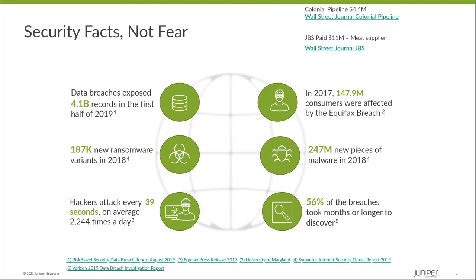A lot of what's available now to anybody out there with a credit card and motivation is the ability to buy ransomware as a service or buy DDoS as a service. All you really need is the motivation, a credit card, and maybe access to the dark web at most. The Colonial Pipeline incident specifically was interesting in that the group behind the malware as a service used in that attack never meant for it to go that far — they didn't intend for somebody to use it in such a way.